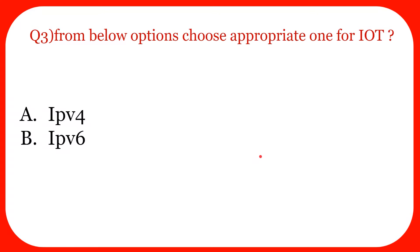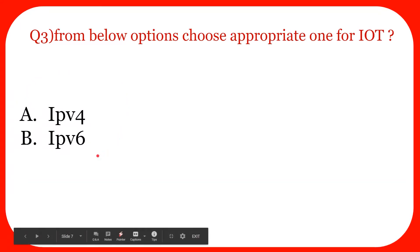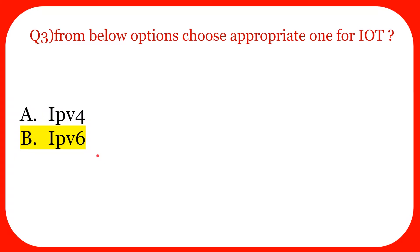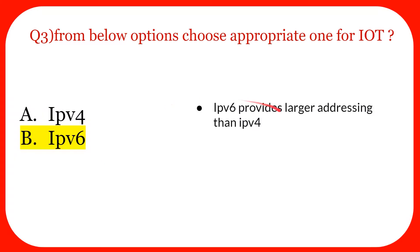Question three: Choose an appropriate IP version for IoT — IPv4 or IPv6? The correct answer is option B, IPv6. IPv6 provides a larger addressing space than IPv4. With passing time, mobile phones, laptops, and devices are increasing day by day, and for routing purposes we must assign IP addresses. To accommodate a huge number of devices, we need a version with a larger addressing space — so the answer is IPv6.